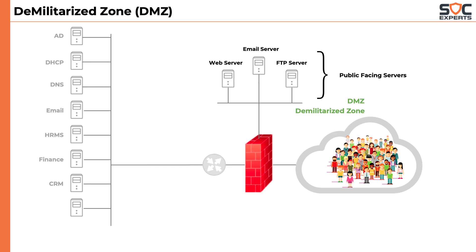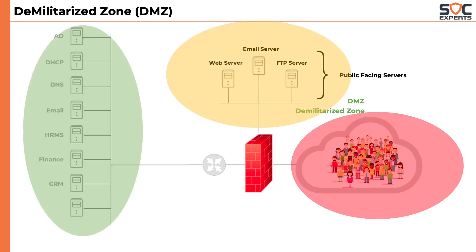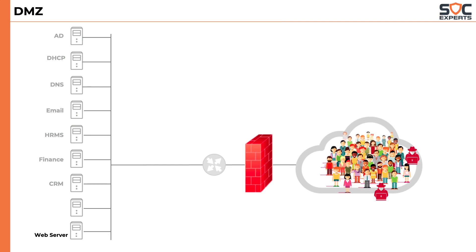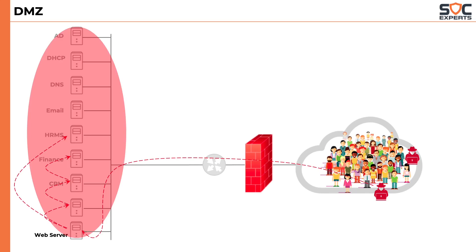DMZ helps in segregating the network segments. The reason is that public-facing servers are easy targets for attackers. If these public-facing servers are compromised, we don't want the attack to impact our internal servers like Active Directory, DNS, DHCP, application servers, database servers, etc. Imagine instead of having a DMZ, we keep the web server in our server LAN. Because we want anyone on the internet to access the web server, we configure the firewall to allow traffic on port 443 from all IP addresses. If the attacker ever successfully compromises our web server, he can eventually get hold of all the servers in the server LAN. That's why public-facing servers are kept in the DMZ.